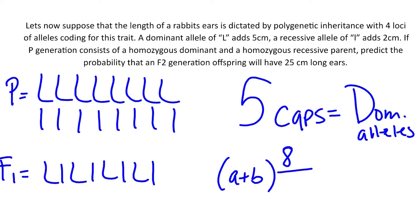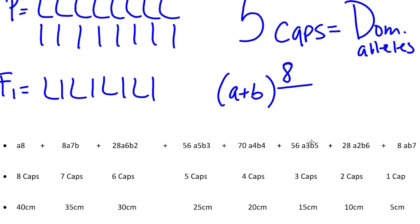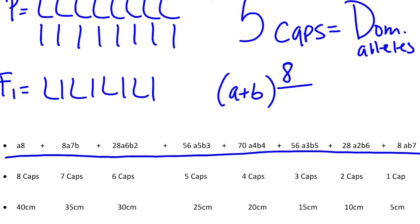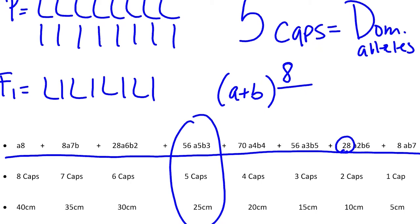I'm going to spare you the full binomial expansion working, and let you work it out on your scratch paper. Your end result is listed here. Remember that the number in front of your particular variable tells you how many of that offspring will have that particular trait. A stands for your capital letters or dominant traits; B is for your lowercase recessive alleles. So you have eight capitals, seven, and so on. We're looking for five capitals, which gives you at least a length of 25 centimeters.